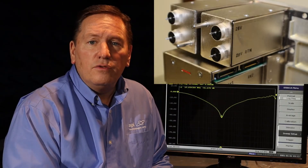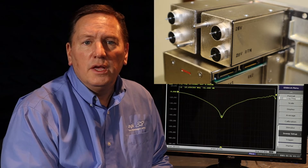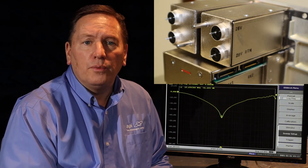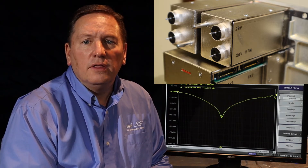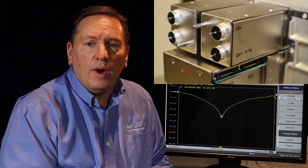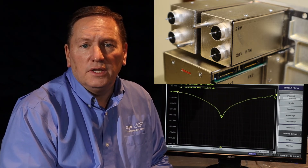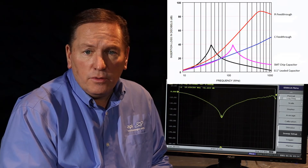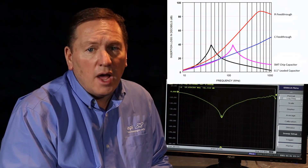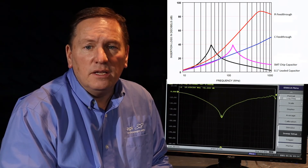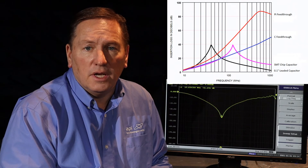The key to a feed-through filter's excellent performance is the metallic enclosure into which it is mounted. For all practical purposes, a coaxial feed-through capacitor that passes a lead wire through the center of itself and whose ground completely encircles the lead wire does not have a self-resonant frequency. Feed-through capacitors simply do not turn into inductors at higher frequencies, and every leaded or surface mount capacitor does.